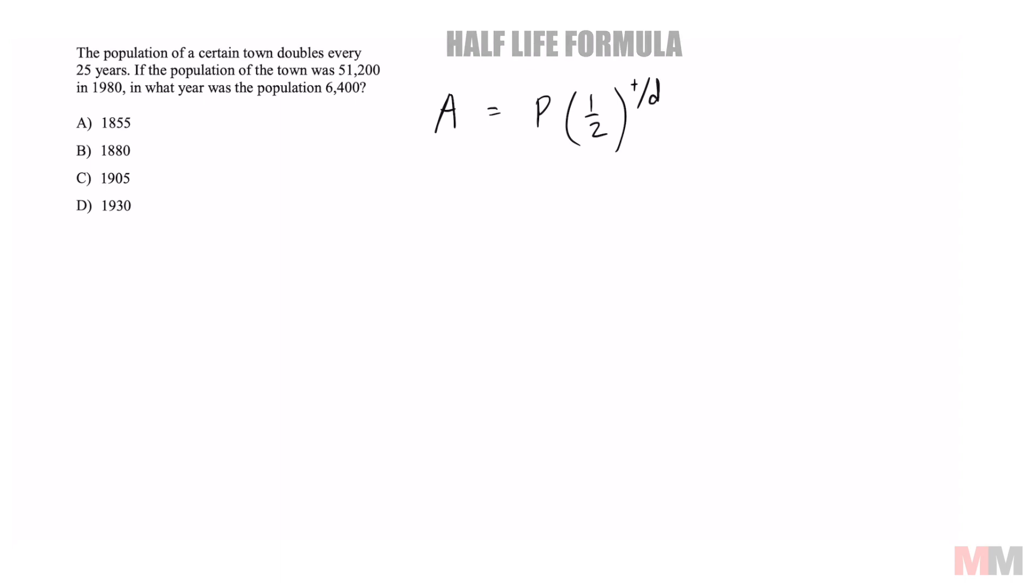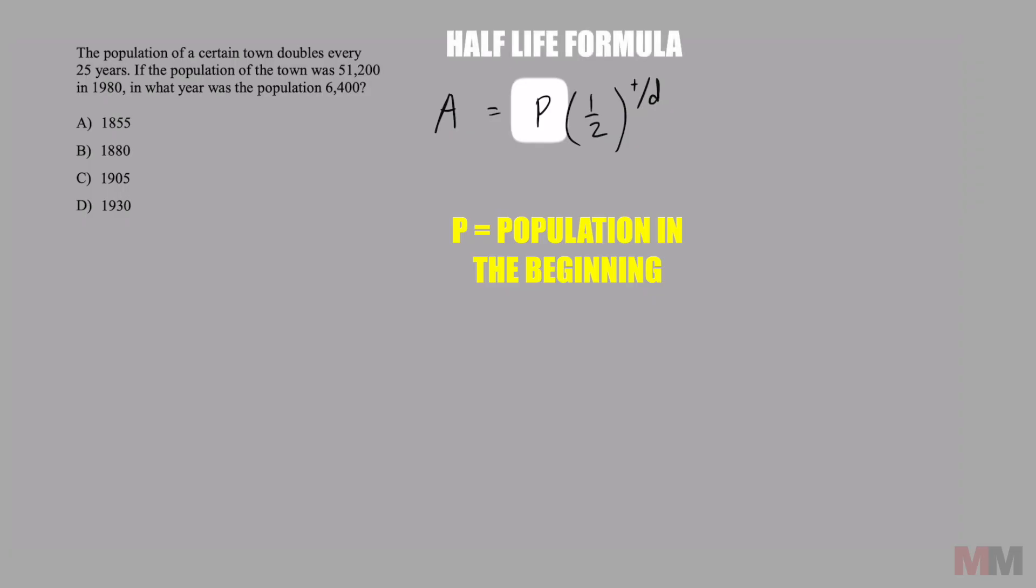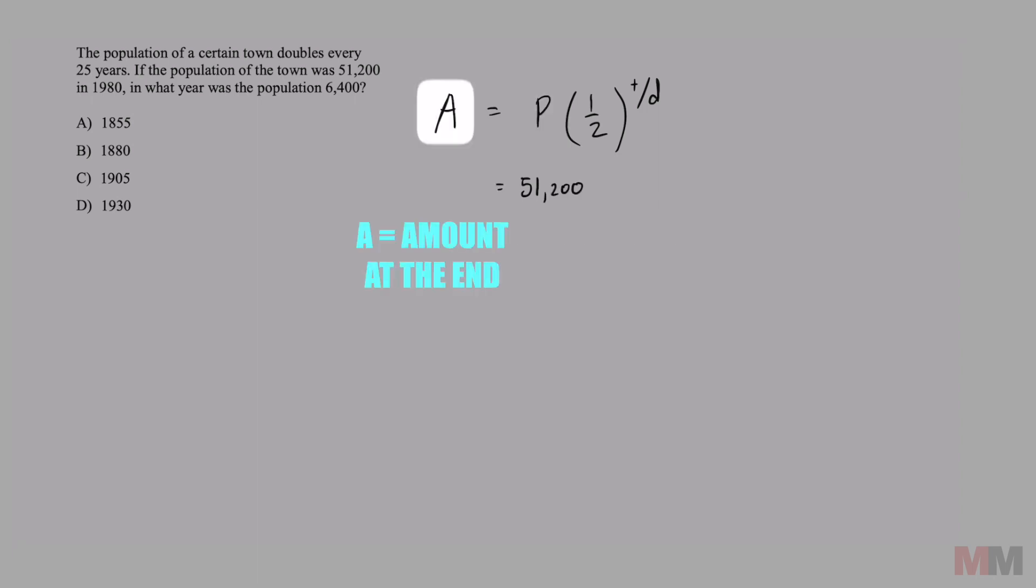We're going to start with the letter P, which is the population in the beginning, 51,200. A is the amount that we want to get at the end, which is 6,400.